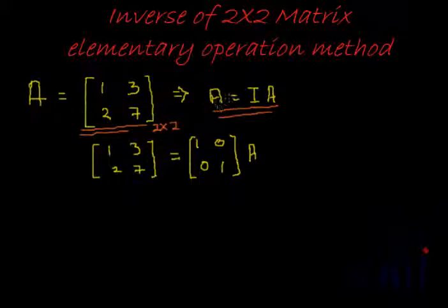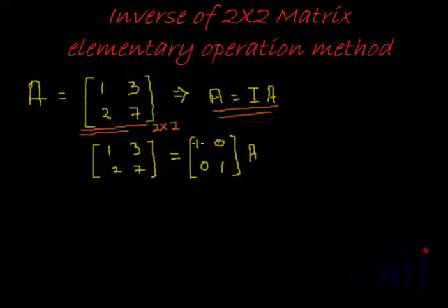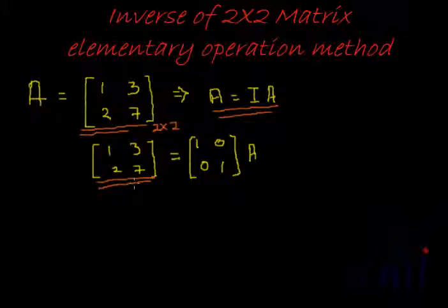The property we use to find the inverse using elementary operations is that A equals the identity matrix multiplied by A. So we can write the given matrix [1, 2; 3, 7] as the 2×2 identity matrix [1, 0; 0, 1] multiplied by A itself. Now, all we need to do is convert the left-hand side matrix into an identity matrix.